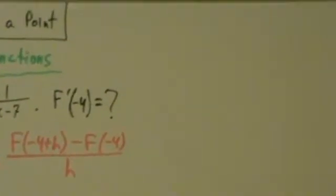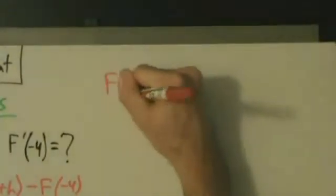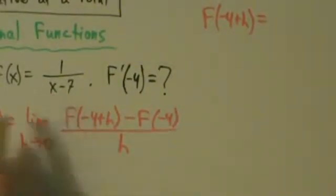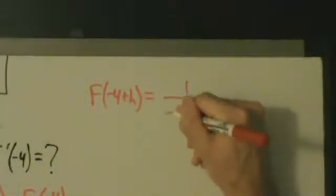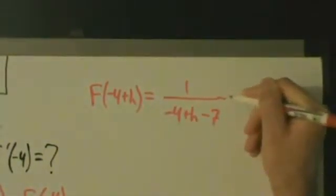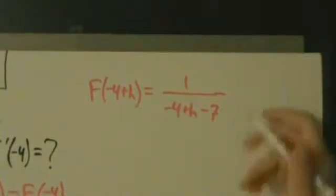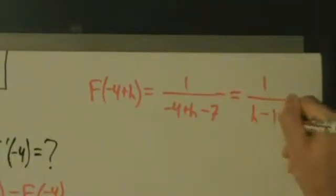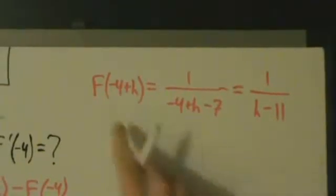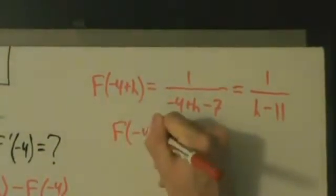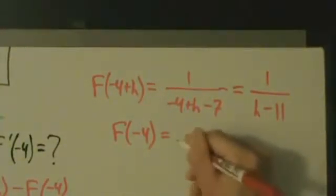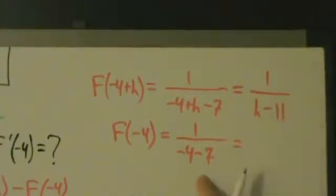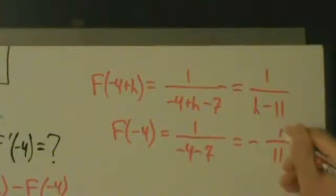Now we've just got to figure out what f of negative 4 plus h is, and what f of negative 4 is. f of x is 1 over x minus 7, so f of negative 4 plus h is 1 over negative 4 plus h minus 7, which simplifies to 1 over h minus 11. And f of negative 4 is 1 over negative 4 minus 7, which is 1 over negative 11, or negative 1 eleventh.